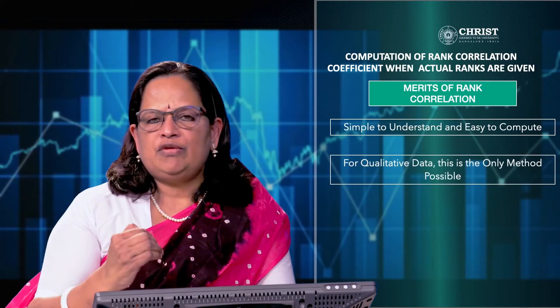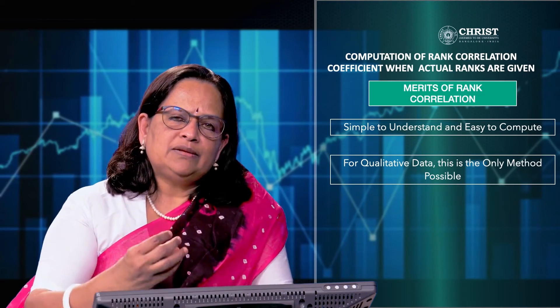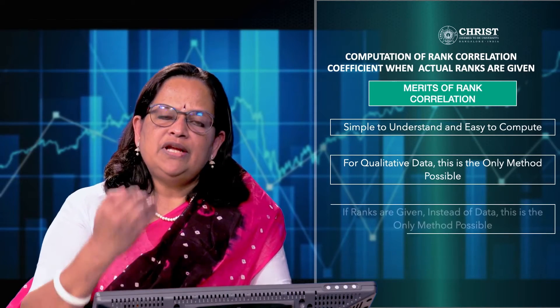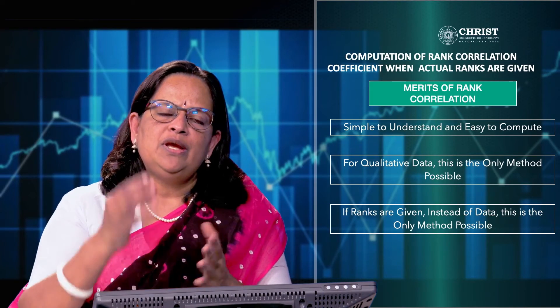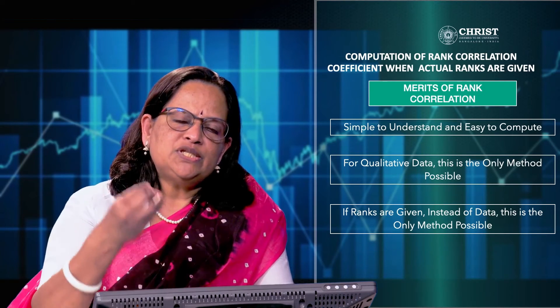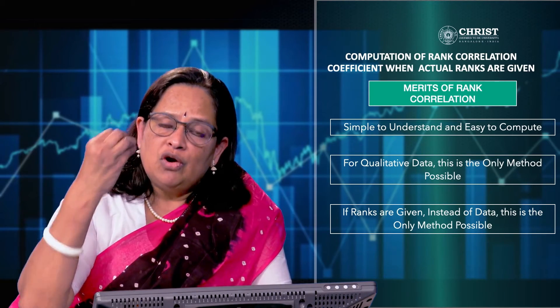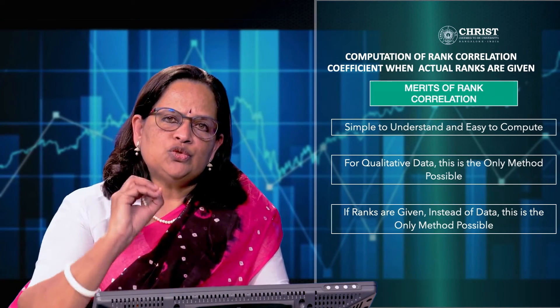The merits of rank correlation are: it is simple to understand and easy to compute. It is the only method that can be used for qualitative information — such as judgment, honesty, or leadership abilities. If ranks are given instead of data, this is the only method possible. For quantitative data, Karl Pearson's coefficient of correlation can be used, but for qualitative data or when ranks are given, only rank correlation applies.